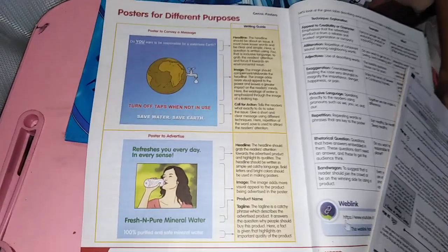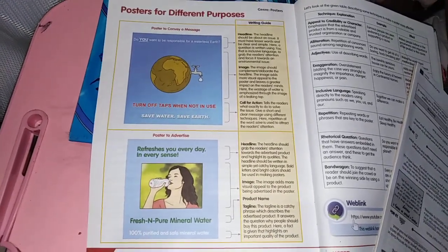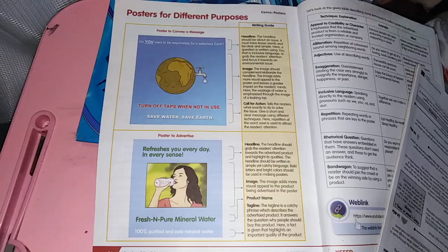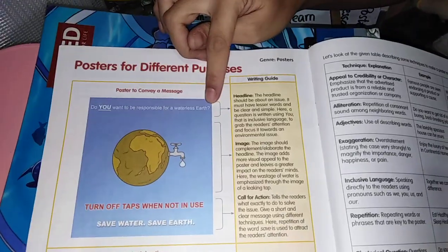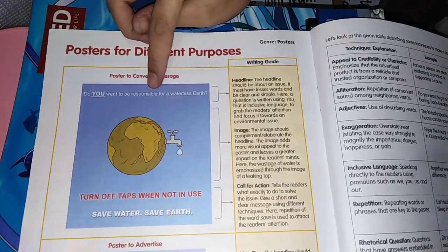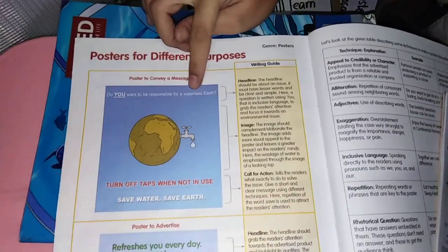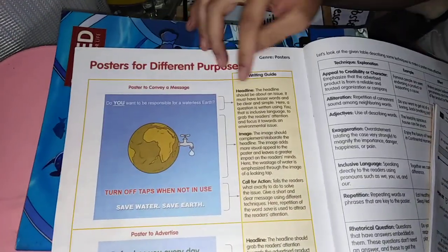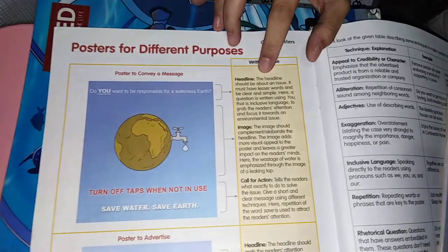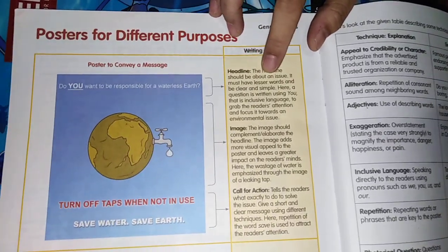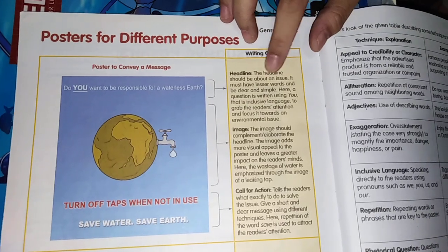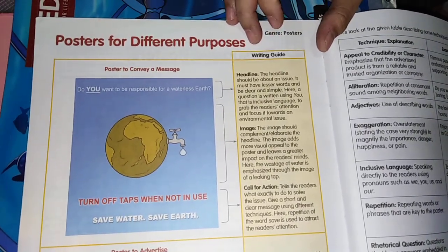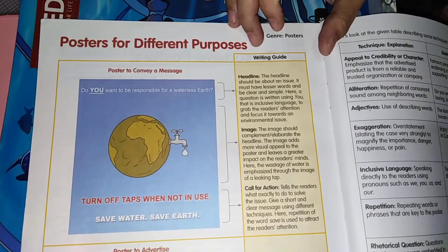Now we're going to read together. We've got here the writing guide. This is what you call the headline: 'Do you want to be responsible for a waterless earth?' The headline should be about an issue. It must have fewer words and be clear and simple.